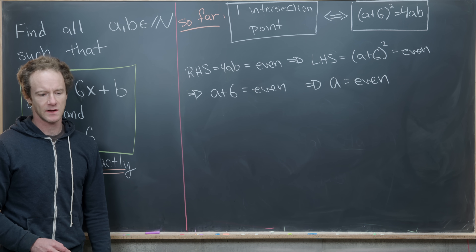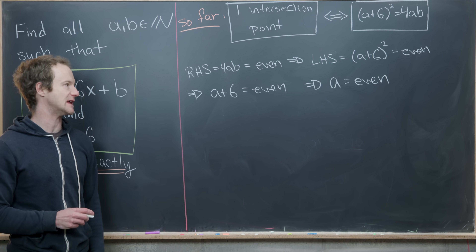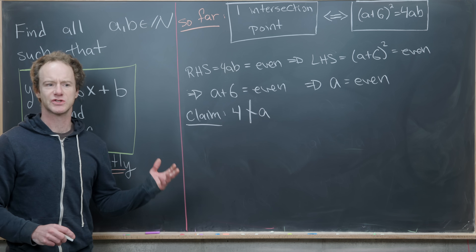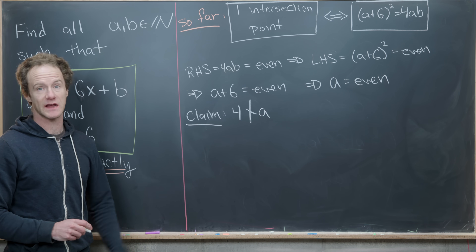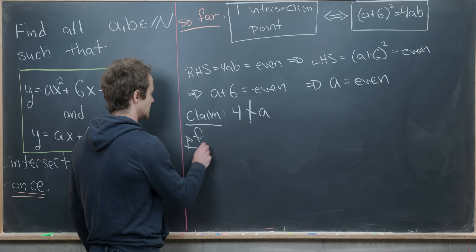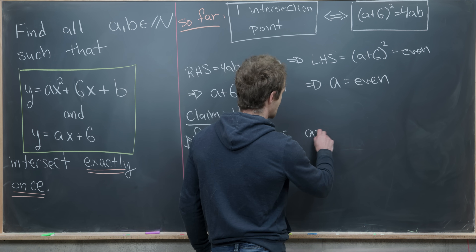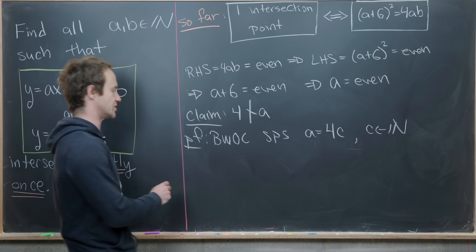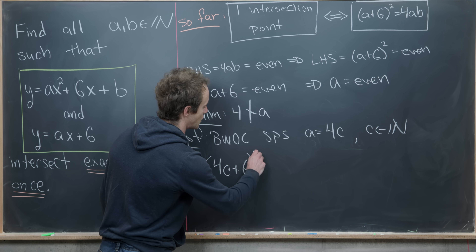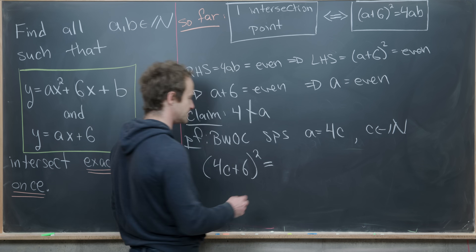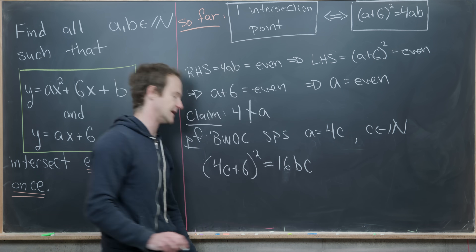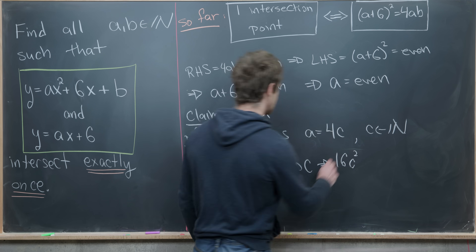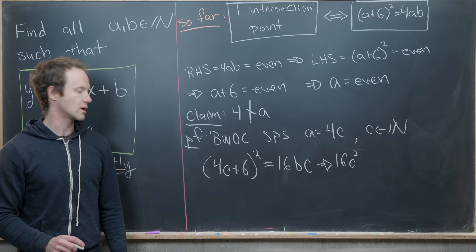We know a is even. Now let's show a cannot be a multiple of 4. Suppose for contradiction that a = 4c for some natural number c. Substituting into (a+6)² = 4ab gives (4c + 6)² = 16bc. Expanding the left side yields 16c² + 48c + 36 = 16bc.